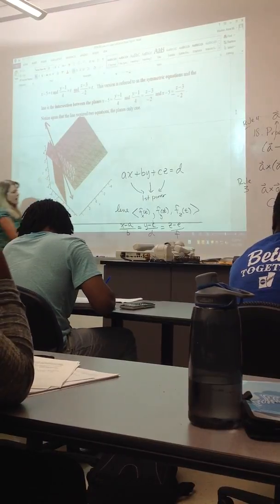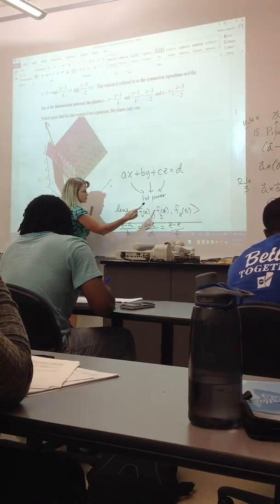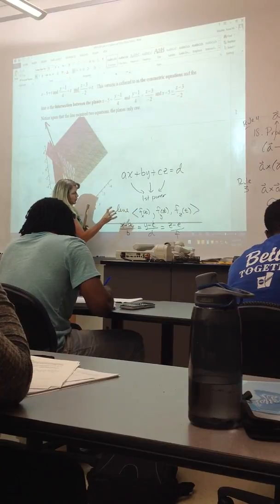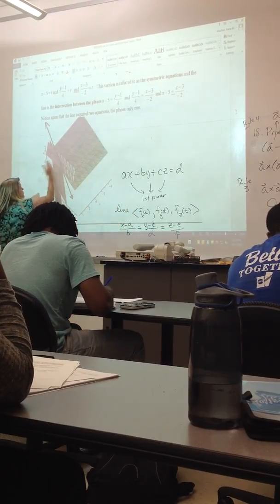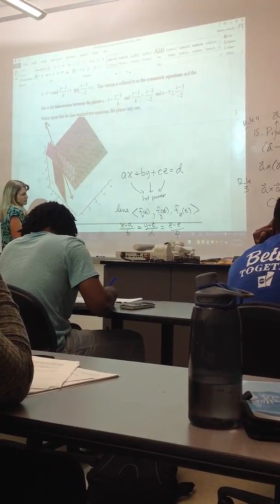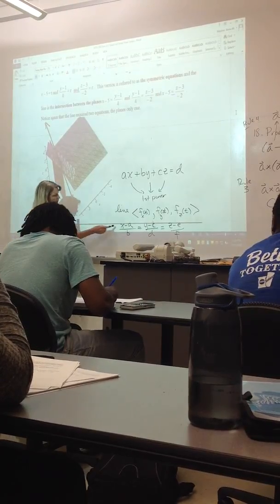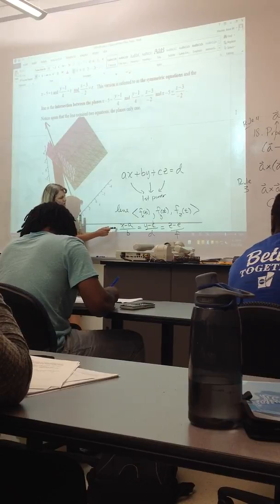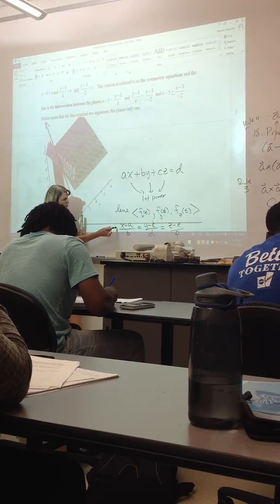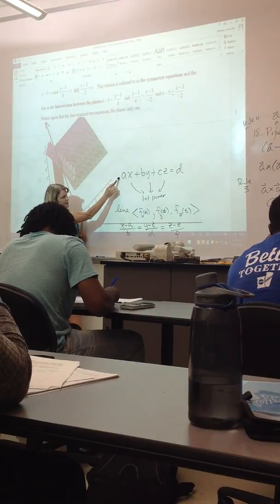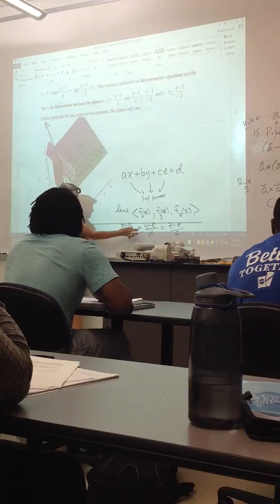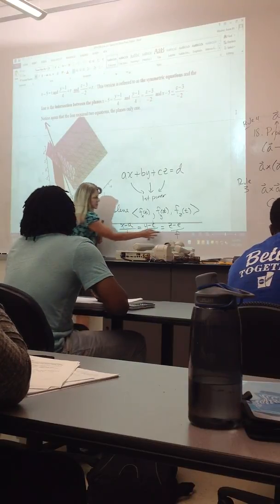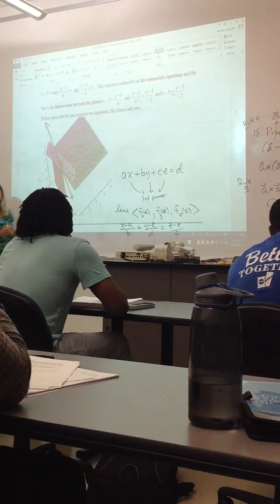Again, once you have these, you could use them, or you could use information about the planes, like if you intersect two planes it can form a line. But notice this has more information in it than just this. How many equal signs do we have? Two. I have two equal signs, meaning I have two different equations that are explaining my line.